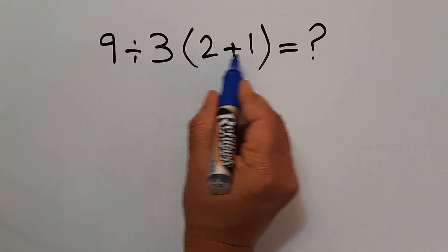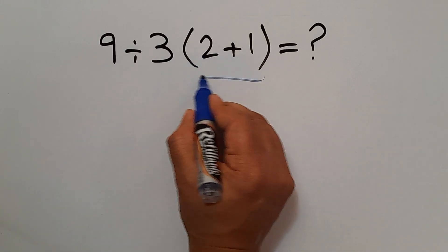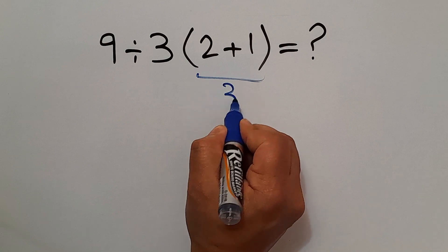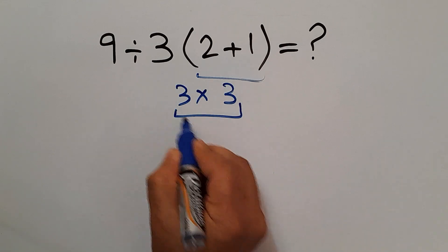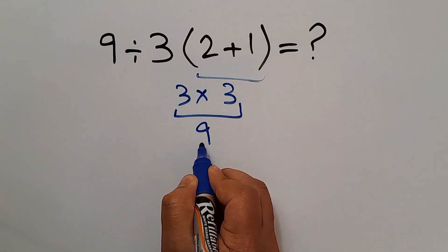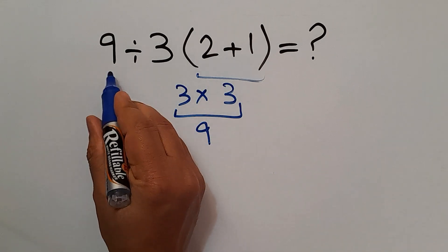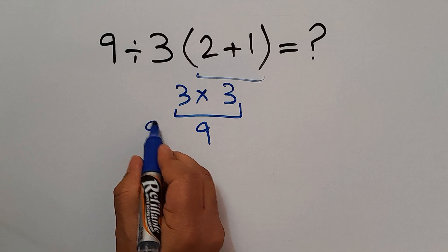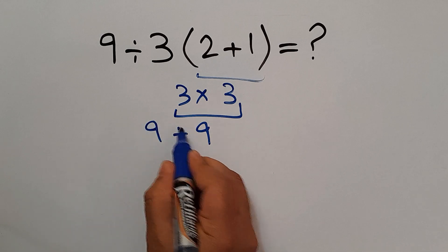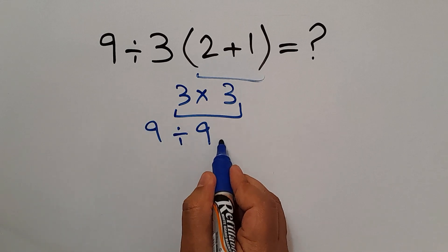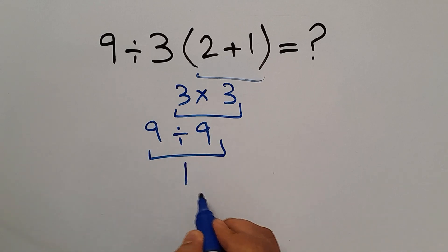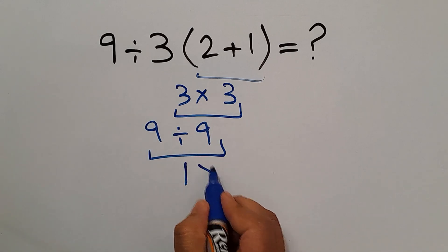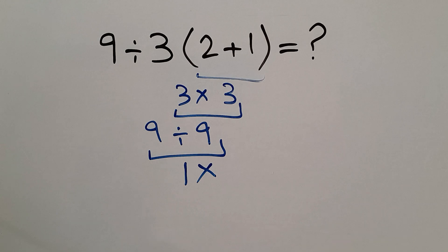2 plus 1 gives us 3, and 3 times 3 equals 9. So, 9 divided by this 9 gives us just 1. But this answer is not correct.